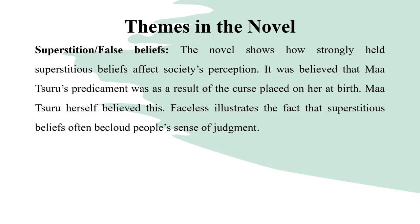The theme of superstition and false beliefs is also prominent. Fofo's mother was accused of being cursed, which caused her husband to leave. Baby T was accused of being cursed, and it was this belief that ultimately led to her death — her uncle convinced himself her curse had transferred to him. The novel acts as an eye-opener to how false superstitious beliefs can destroy families. Had Fofo's father stayed, the situation might never have deteriorated so badly.